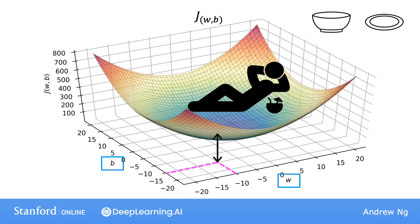then the height of the surface above this point is the value of j when w is minus 10 and b is minus 15.